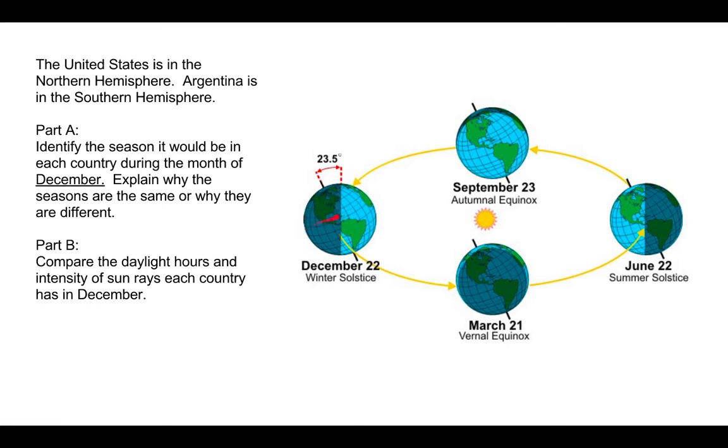In December for us in the U.S., it's winter. For Argentina, since they are in the southern hemisphere, the seasons are opposite, so it would be summertime for them.